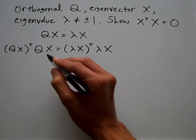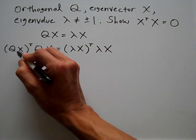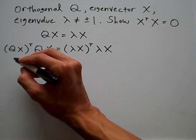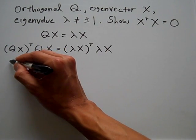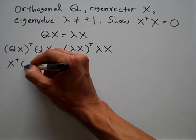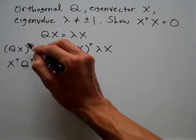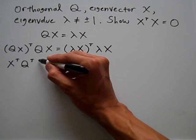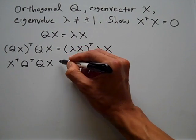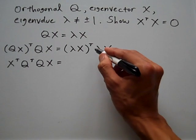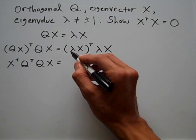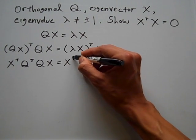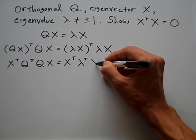On the left side, the transpose of QX can be rewritten as X transpose times Q transpose times QX. Notice how the order changes when I move the transpose operation inside the parentheses. Similarly, on the right-hand side, when I take the transpose of lambda times X, the order reverses, so X transpose times lambda transpose times lambda times X.